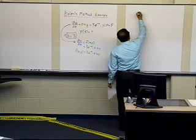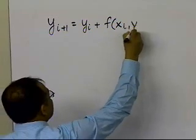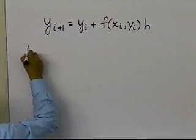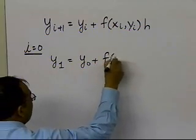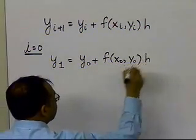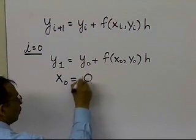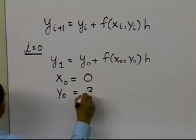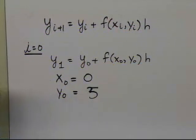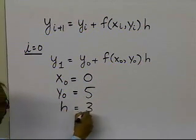The Euler's method formula is: y(i+1) equals y(i) plus f(x(i), y(i)) times h. If I choose i equal to 0, I get y1 equals y0 plus f(x0, y0) times h. Now I already know that x0 is 0, the value of y0 is 5 — that's the boundary condition given to me — and h is 3, because that's what I am choosing.